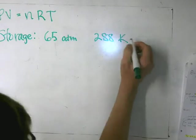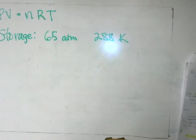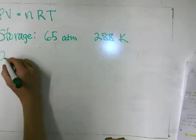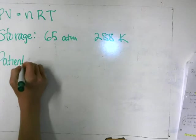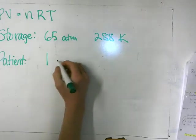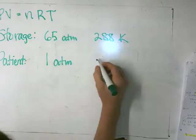The tanks are stored in a separate room, and the oxygen is pumped to the patient's room, where it is administered at a pressure of one atmosphere and a temperature of 297 Kelvin. So in the patient's room, the pressure is one atmosphere and the temperature is 297 Kelvin.